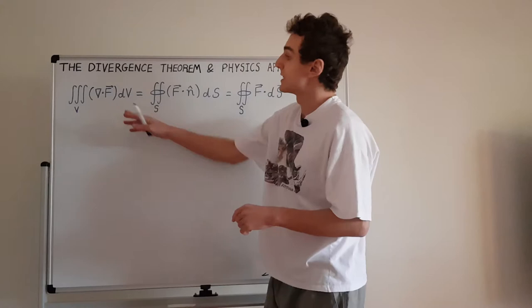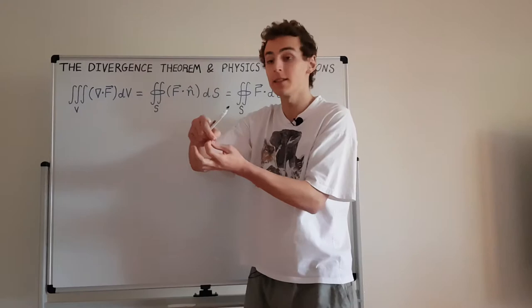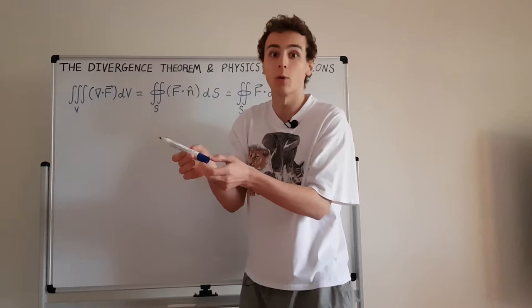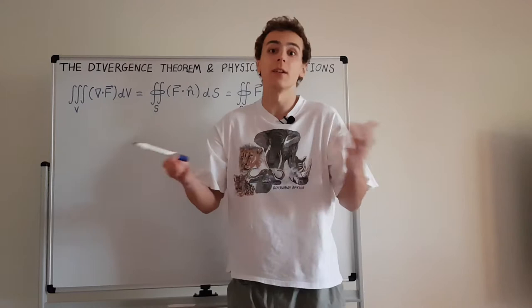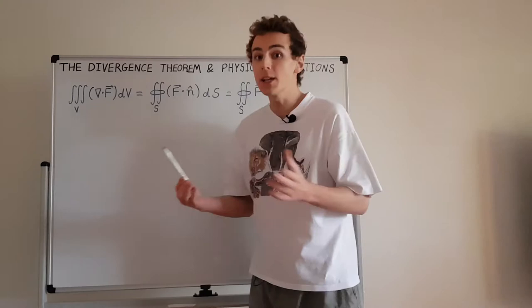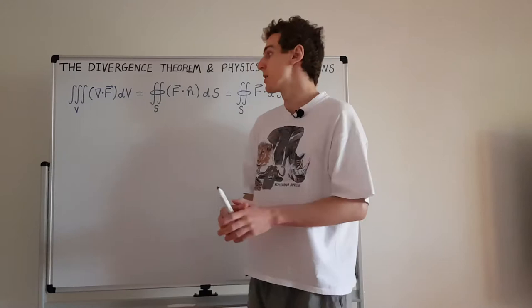If we use Cartesian coordinates, we'd have x, y, and z, turning dV into dx dy dz. In cylindrical coordinates, we'd have a vertical z-axis, a radial distance from that axis, and an angle theta. We could also use spherical coordinates, with a radial distance from a center and two angles, theta and phi.